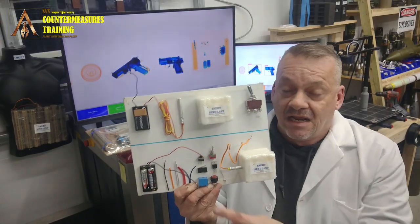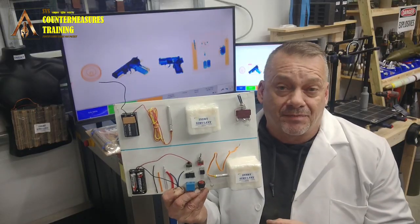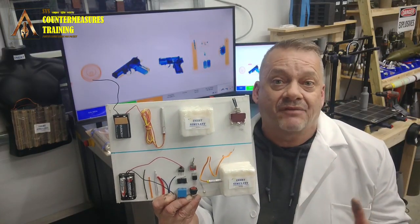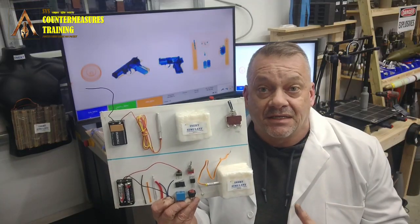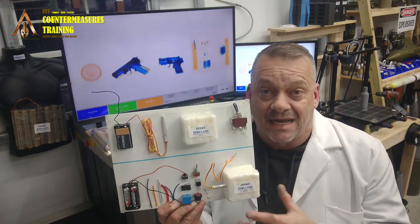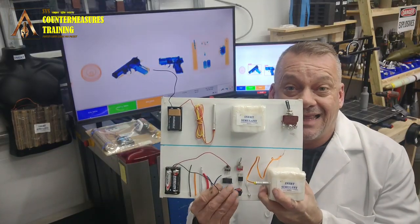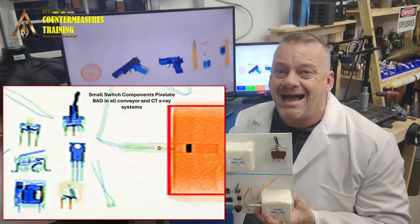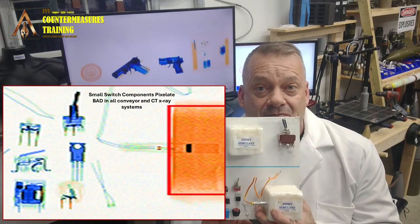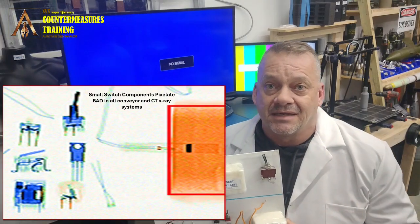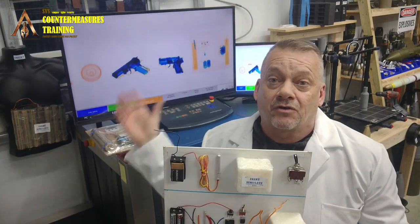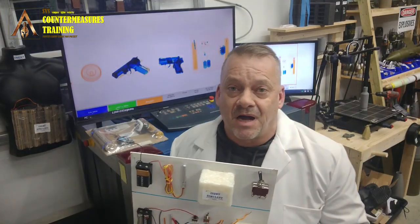When you get to the switch part, it gets really complicated. Bomb techs can name every single switch typically used in IEDs, but getting a new x-ray screener to that level of recognition is a challenge. The other problem is these systems do not have the resolution or the line pairs per millimeter to show many of these very small components in a recognizable shape — they pixelate out very badly compared to a bomb tech portable x-ray system.